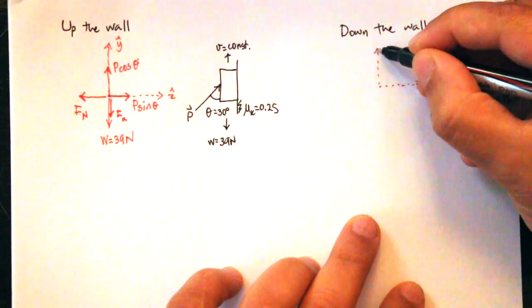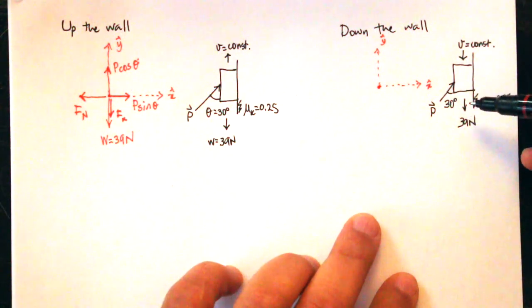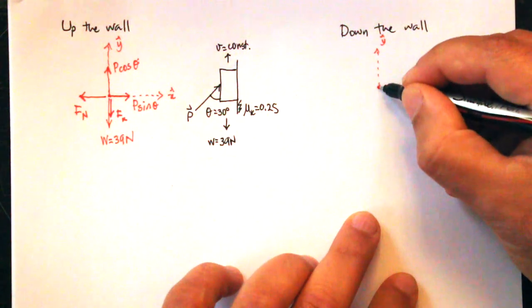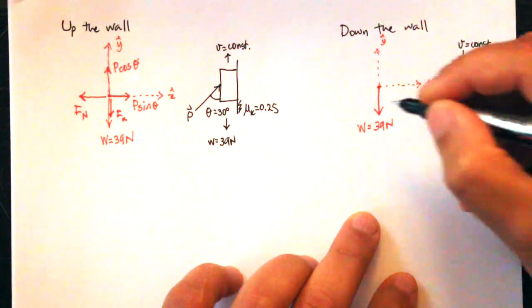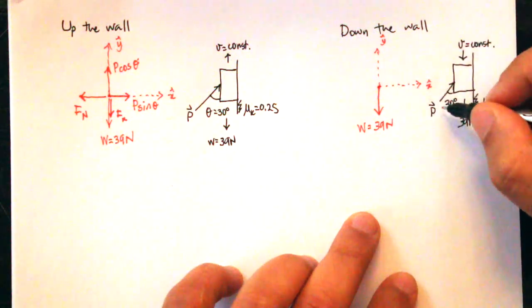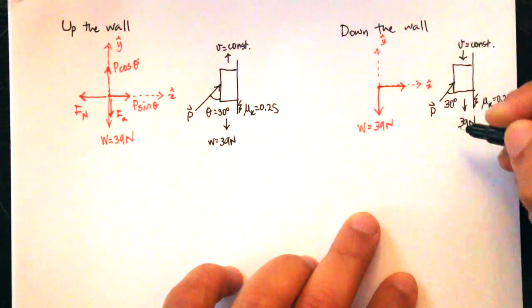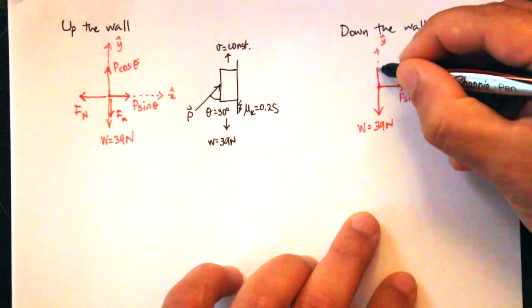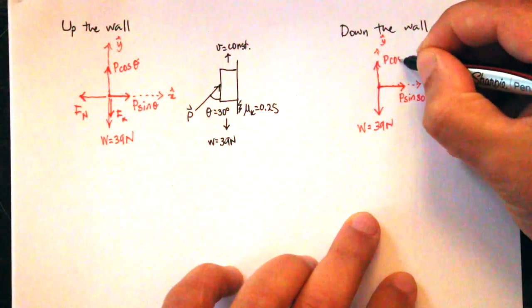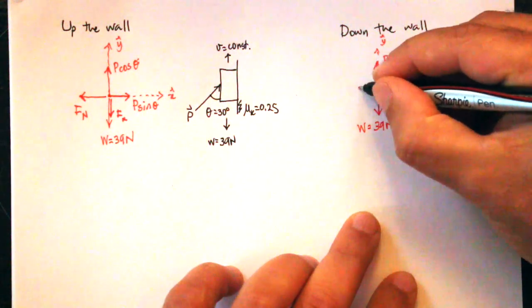In the free body diagram, we represent the block as a point and examine all forces acting on it. The force of gravity pulls the block down with 39 Newtons. Force P is at an angle, so we resolve it into components: P sine 30 in the positive X direction, and P cosine 30 in the positive Y direction, since 30 degrees is measured from the vertical.